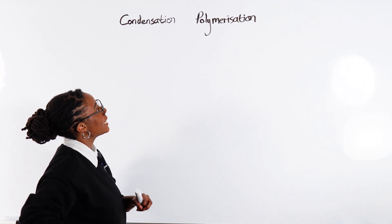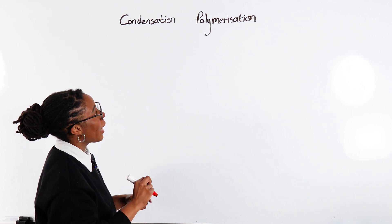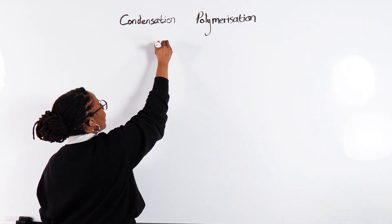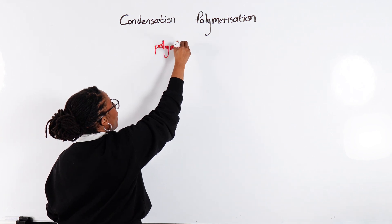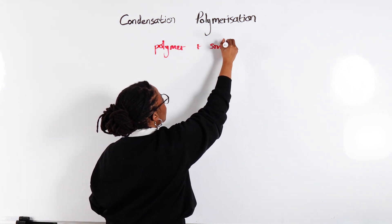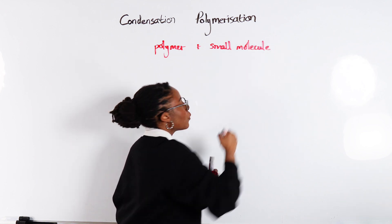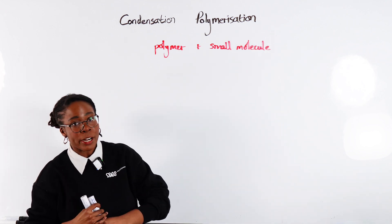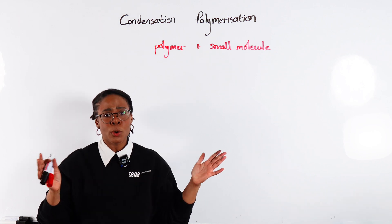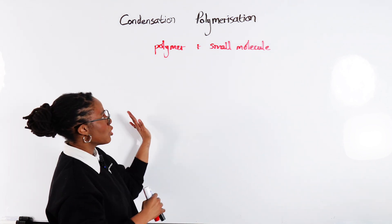When it comes to condensation polymerization, we have our monomers and we produce a polymer, but we also release a small molecule. This is of course different to addition polymerization, which we see with alkenes, where when those monomers join up there is nothing else that's released — it's just the polymer.